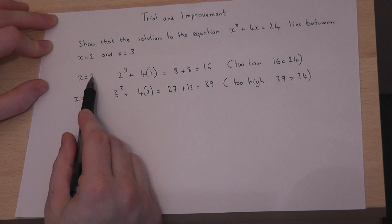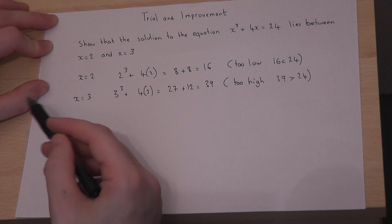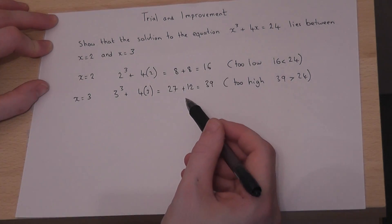When x equals 2, the answer is too low. When x equals 3, the answer is too high. Therefore, we can deduce that the solution lies between x equals 2 and x equals 3.